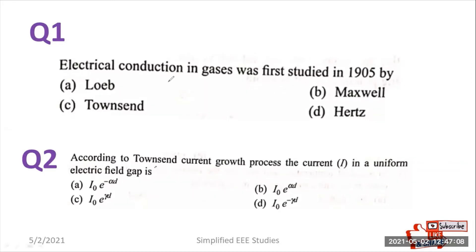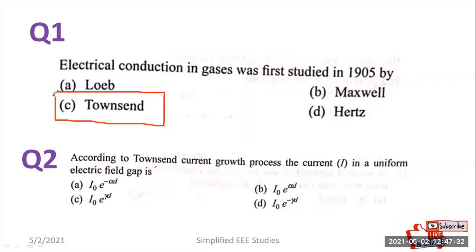Actually, electrical conduction in gases was first studied in the year 1905 by Townsend. Townsend derived the Townsend's current growth equation and studied in depth the breakdown in gaseous dielectric material. I have derived Townsend's current growth equation by considering primary ionization and secondary ionization coefficients — go through those particular videos which I have already prepared.